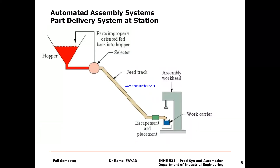Let's talk about the automated assembly system. In this flow chart, what we see here is a part delivery system at a station. It's composed of several parts. To start with, we have the hopper — the hopper is literally the container where all the components are loaded at the workstation. Usually a hopper will have one type of parts, and since an assembly is made of several different parts, we need a hopper for every single part. All components are loaded in bulk into the hopper.